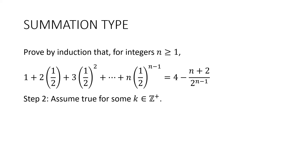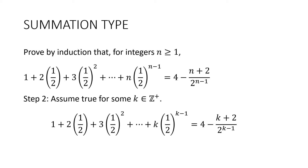Step two: assume true for some k that's a positive integer. So that means the summation of all of this up to the kth term is going to be equal to four take away k plus two divided by two to the k minus one.